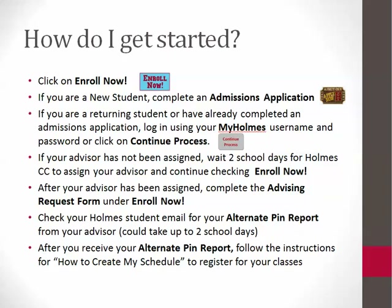To register for an online class, you will need to click on Enroll Now on the front of the Holmes website. Follow the directions there to complete an application and contact your advisor for a list of suggested classes and an alternate PIN number by email. You will use this alternate PIN number to register for your courses in myHolmes. You will need a new alternate PIN number each semester.